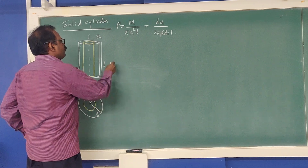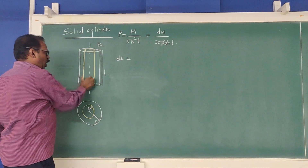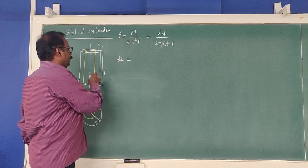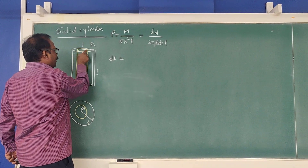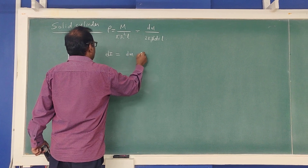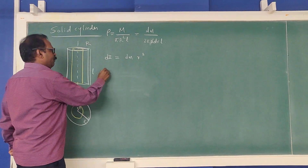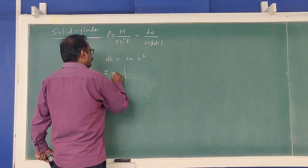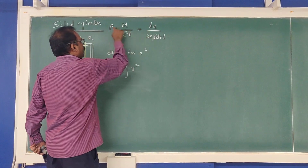What is the moment of inertia of a hollow cylinder? For any mass element, it is mass times distance squared from the axis. So the moment of inertia is I = ∫dI = ∫r² dm. Substituting dm = ρ · 2πr · dr · L gives the integrand as ρ · 2πr · r² · dr · L.